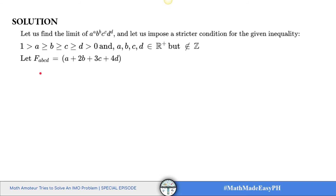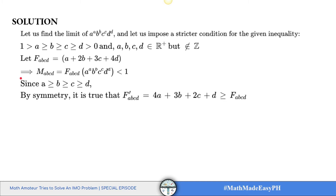Let us define f(a,b,c,d) = a + 2b + 3c + 4d, and let the whole inequality be m(a,b,c,d). Since a ≥ b ≥ c ≥ d, by symmetry it is true that f'(a,b,c,d) = 4a + 3b + 2c + d is greater than or equal to f(a,b,c,d). What I did here is reverse the order of the coefficients from the original f to create f prime.